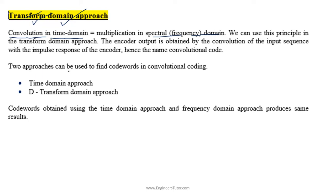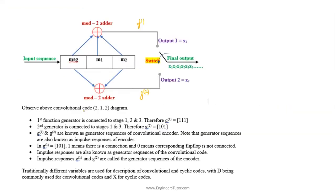We have two approaches to find the code words or output of the encoder: one is the time domain approach and the other is the transform domain approach. Code words obtained using both domains produce the same result. Not only these two domains, even the code words obtained from graphical representations like tree diagram, trellis diagram will be the same due to this same output result.